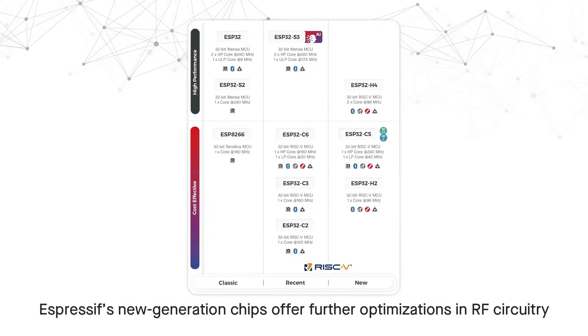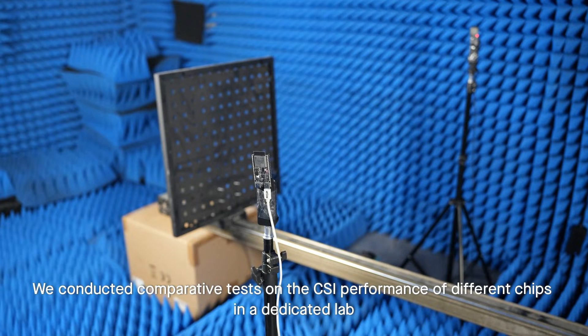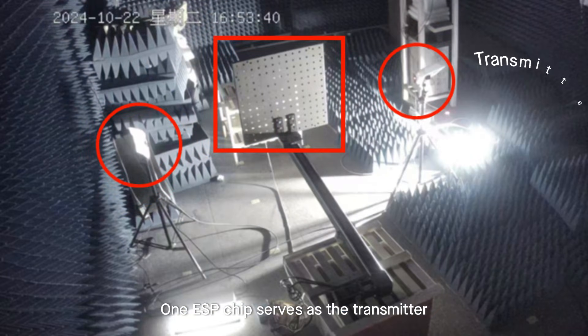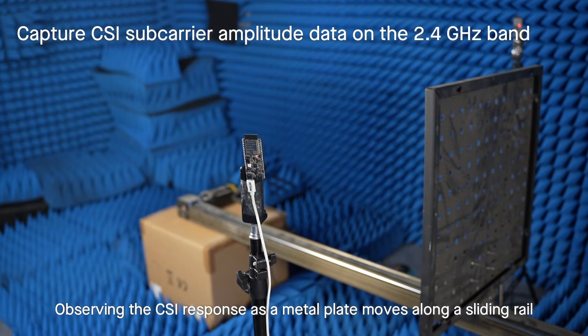As Espressif's new generation chips offer further optimizations in RF circuitry, we conducted comparative tests on the CSI performance of different chips in a dedicated lab. One ESP chip serves as the transmitter, another serves as the receiver, observing the CSI response.